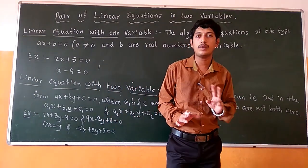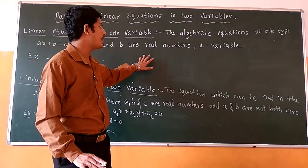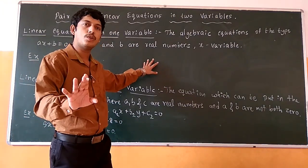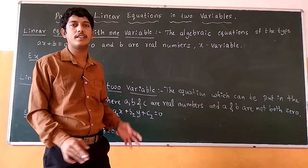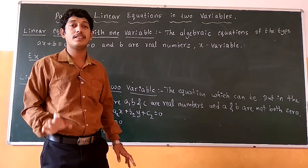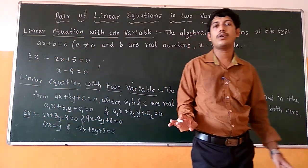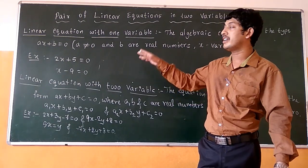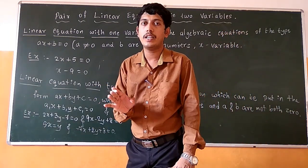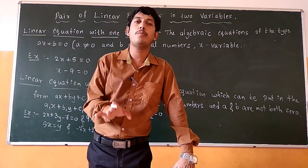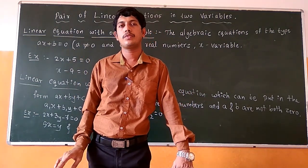If you consider x and y, so these are two variables. In an equation, if it is having only one variable — either x or y or any other term — those kinds of equations are known as linear equations in one variable. Linear equation means that equation whose general form is ax plus b equals to 0.